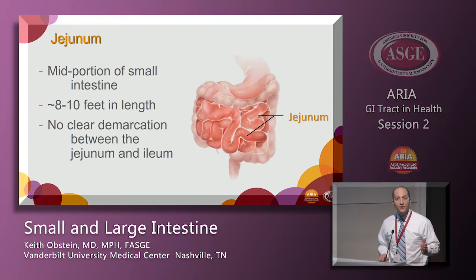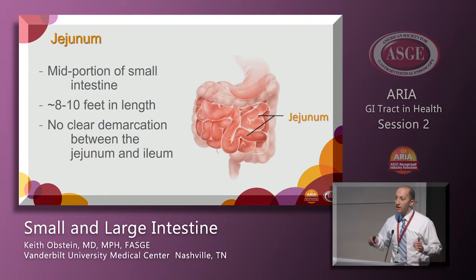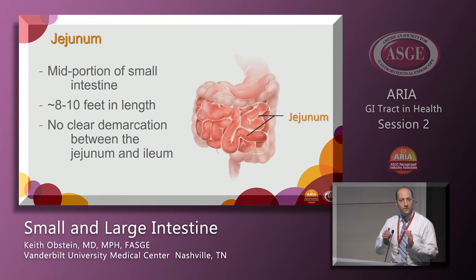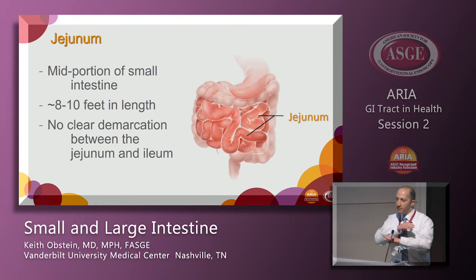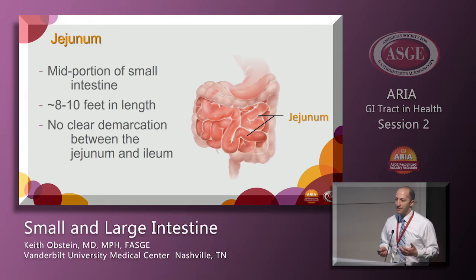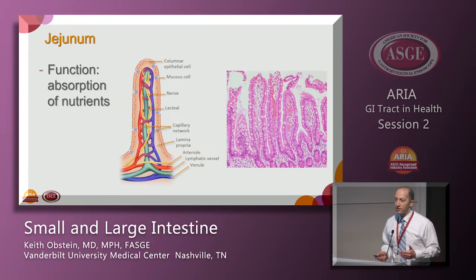As you pass the ligament of Treitz, you get into a large segment called the jejunum, which is about 8 to 10 feet in length. Unlike the duodenum, there really isn't a defined area between where the jejunum ends and the ileum begins — it sort of all flows together. The jejunum's main job is absorption of all the micronutrients and macronutrients along its path across those 8 to 10 feet.